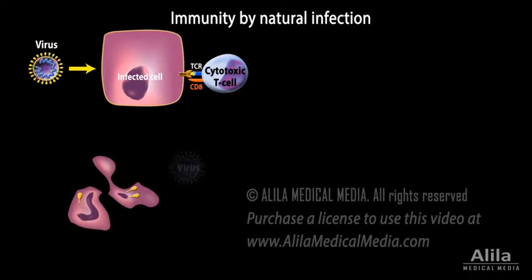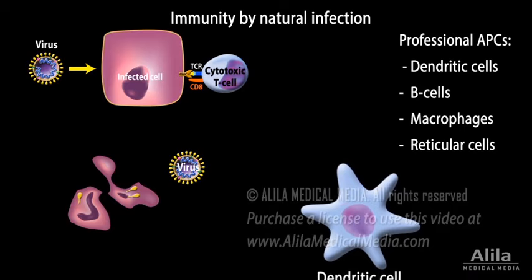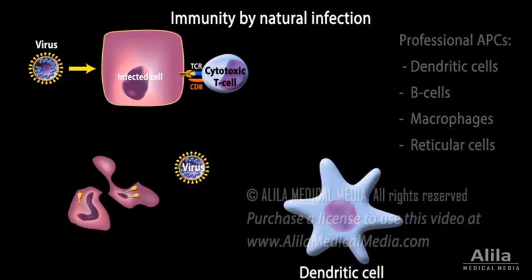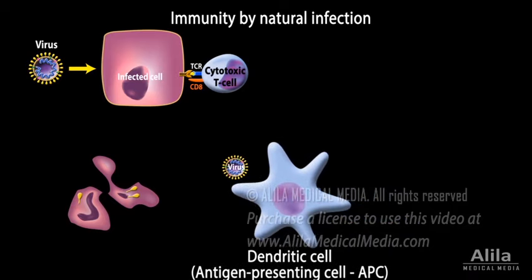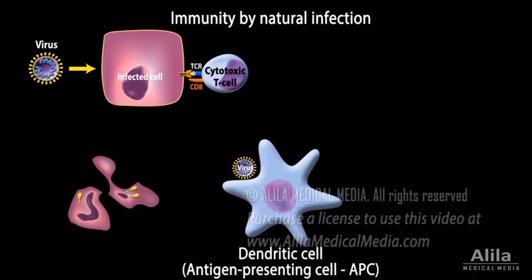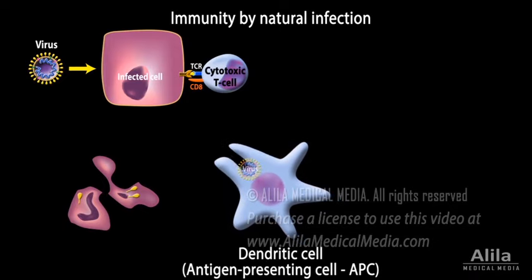At the same time, debris of dead cells and viral particles themselves are picked up by so-called professional antigen-presenting cells, of which dendritic cells are most effective. Dendritic cells patrol body tissues, continuously sampling their environment for intruders.